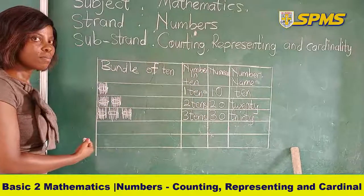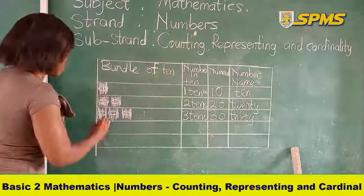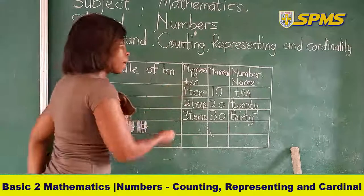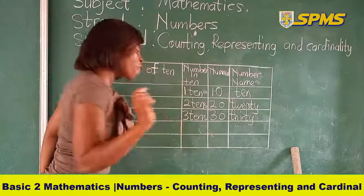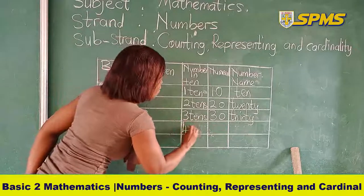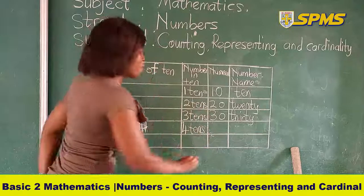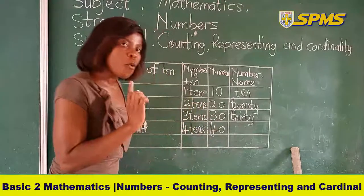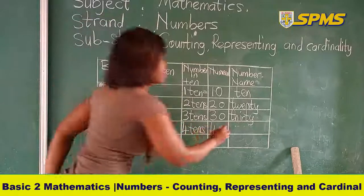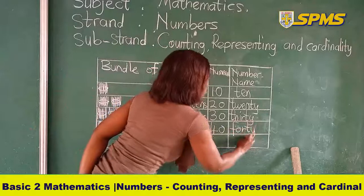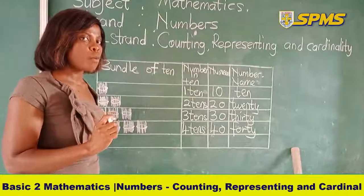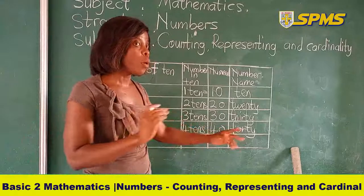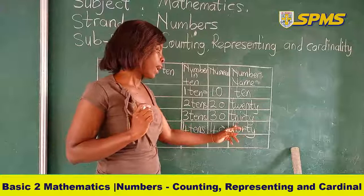Let's move on to the next number. Counting in tens from 30, where do you go? 40. How many bundles? 4 bundles. The number in tens is 4 tens. The numeral is 40. The number name — how do you write it? F-O-R-T-Y. How do you spell 4? 4 is F-O-U-R. But when you are spelling 40, we don't bring the U — we omit the U. That is why we have F-O-R-T-Y.